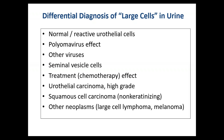This lecture takes a practical approach to urine cytology. What is the differential diagnosis of large cells in urine cytology? Could they be normal or reactive urothelial cells? Umbrella cells are relatively large. Polyomavirus effect could be seen. Other viruses, seminal vesicle cells, treatment or chemotherapy effect, high-grade urothelial carcinoma, squamous cell carcinoma, and others are all in the differential. Let's look at these one by one.